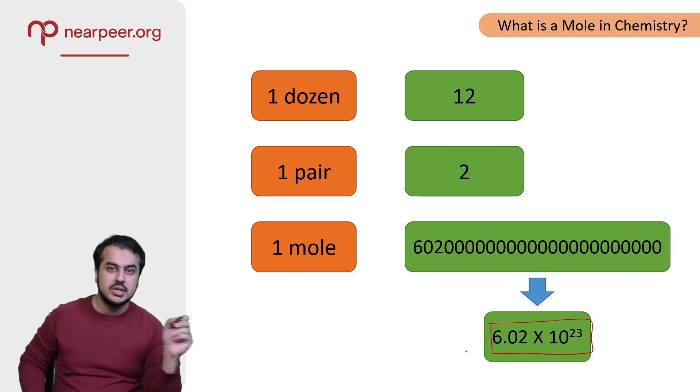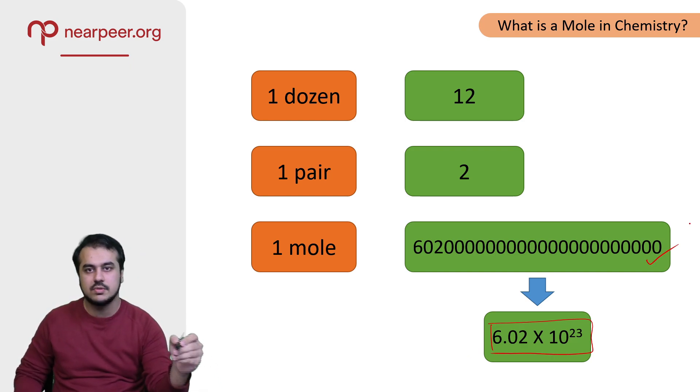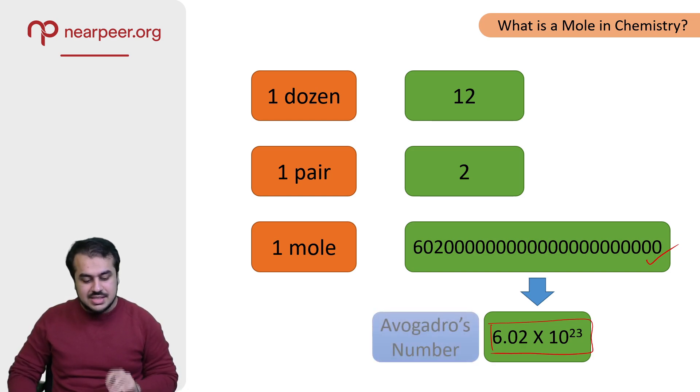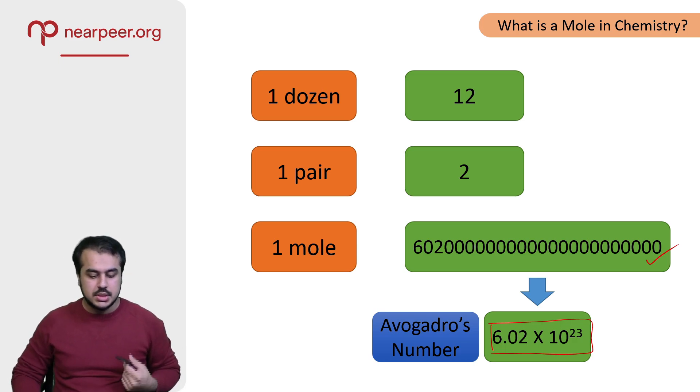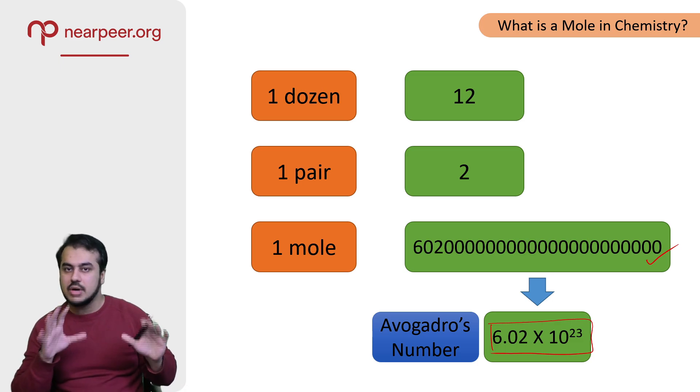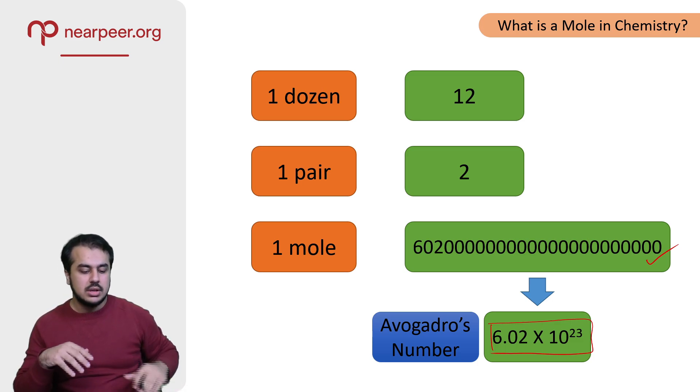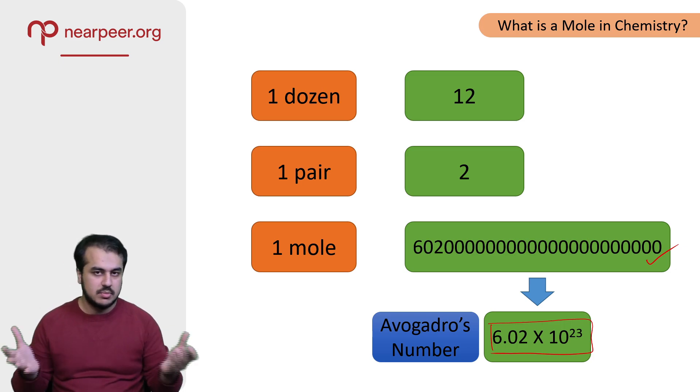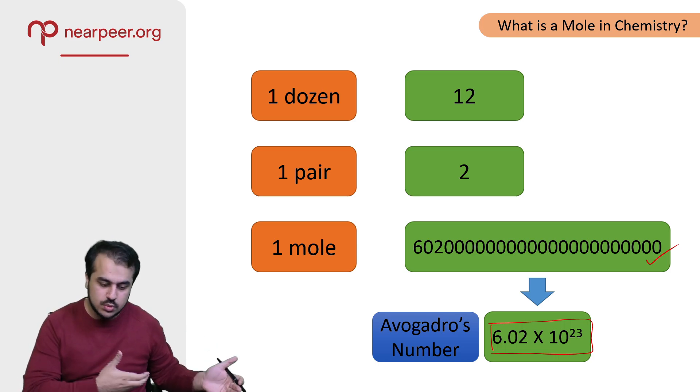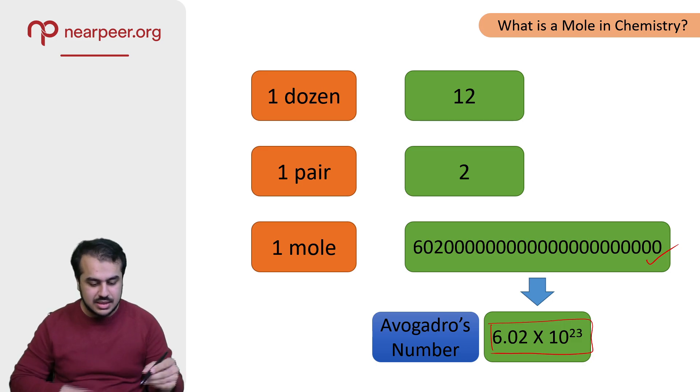We move the decimals backwards, and now this is a very special number that we have: 6.02 into 10 to the power 23. Instead of writing this number over and over again, we can simply write this number. This number is a very special number known as Avogadro's number, also sometimes called the Avogadro's constant. This number you need to memorize - you should know this number by heart.